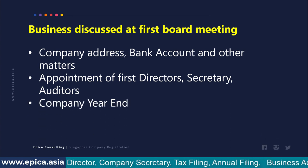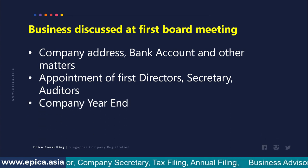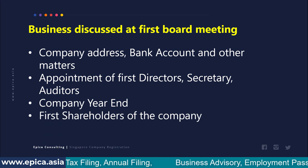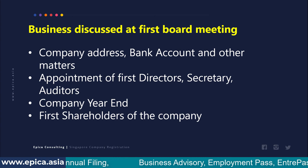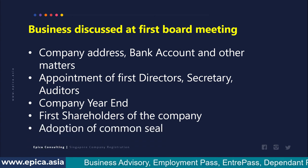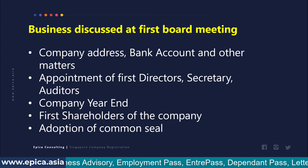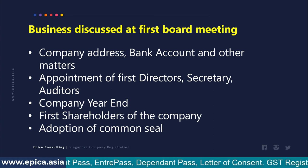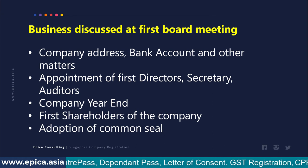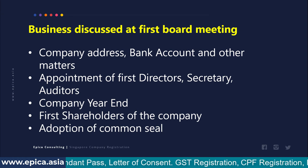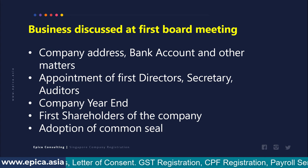The company year end will be agreed. The first shareholders of the company will be mentioned and approval will be obtained as to the first subscribers of the company. The last point is the adoption of the common seal — the board meeting will decide that on all important documents, the common seal should be affixed. Once all these matters are discussed, the agenda for the first board meeting is over.